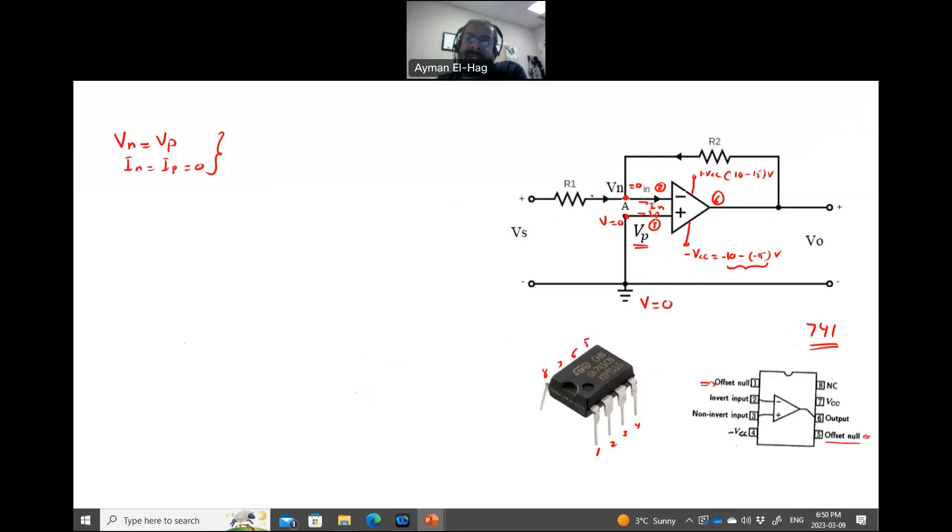And then after that, it's nodal analysis. So basically here we have three nodes. This node A or node B, this node A, and this is node C. So usually we don't apply nodal to a node connected to a voltage supply. We don't apply it to a node connected to the voltage, an output voltage, because this will introduce another unknown, which is the current here, I out.